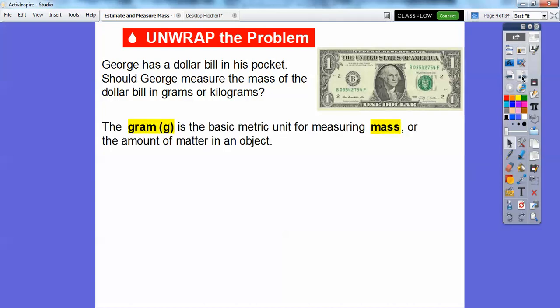Well, a gram, abbreviated with the letter G, is the basic metric unit for measuring mass, or the amount of matter in an object. But mass can also be measured using a metric unit called kilograms, which is kg. So should we measure it in grams or kilograms?